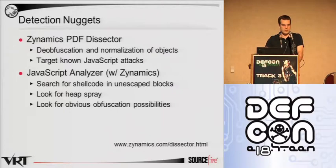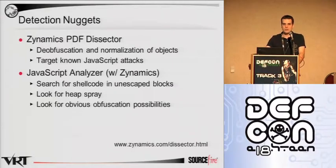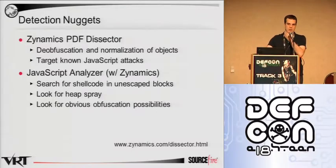It also provides normalization such as JBIG2 decode and the ability to hook known exploits. It's extensible, which is what we like most about it, because we were able to use their library to create an interface with the framework. In particular, the ability to hook JavaScript calls allowed for some interesting results — hooking the unescape call allowed us to flag potential shellcode.